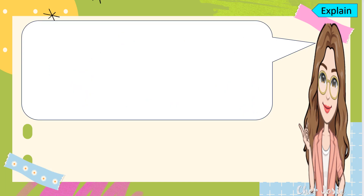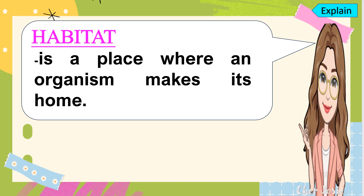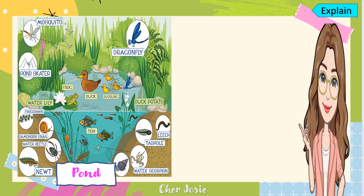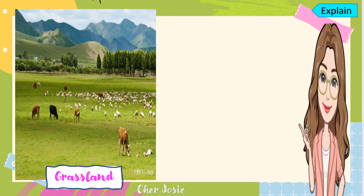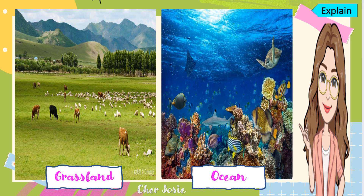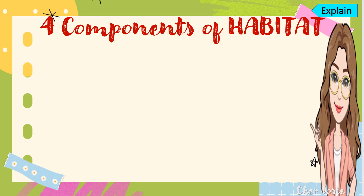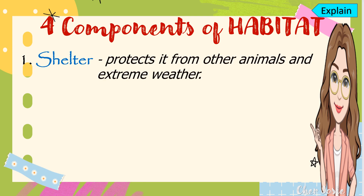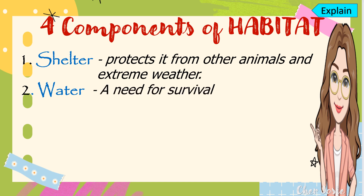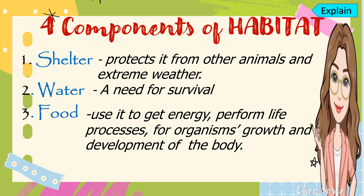Another term to remember is habitat — a place where an organism makes its home. Examples of habitats include pond, forest, grassland, and ocean. There are four components of habitat. The first is shelter, which provides a home for animals and protects them from other animals and extreme weather. The second is water, needed for survival. The third is food, which keeps organisms strong, provides energy, and supports life processes for growth and development.